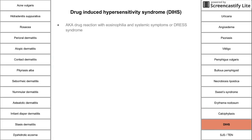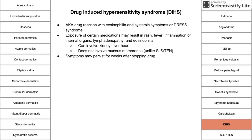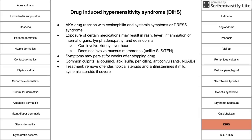DIHS — drug-induced hypersensitivity syndrome, also called DRESS syndrome — is a drug reaction with eosinophilia and systemic symptoms. It is caused by exposure to certain medications, resulting in rash, fever, inflammation of internal organs, lymphadenopathy, and eosinophilia. It can involve the kidney, liver, and heart, and usually does not involve mucous membranes. Symptoms can persist for weeks after stopping the drug. Common culprits include allopurinol, sulfa drugs, penicillins, anticonvulsants, and NSAIDs. Treatment is to remove the offending drug; mild reactions get antihistamines and steroids, severe reactions get systemic steroids.